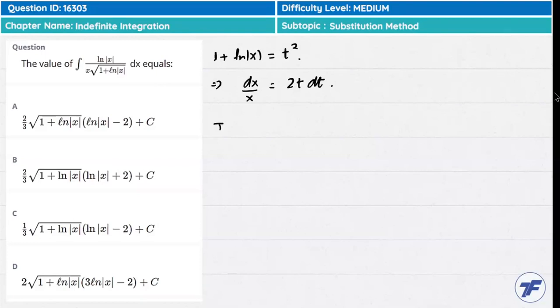Now the integration becomes: the value of ln(x) is t² minus 1, times dx over x which is 2t dt, divided by 1 plus ln(|x|), which is under root of t². And under root of t² will be t.